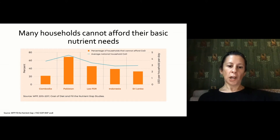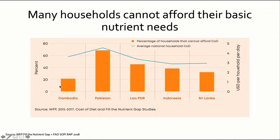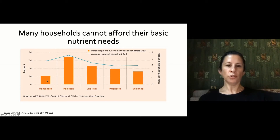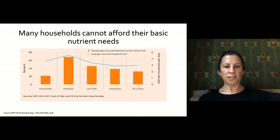This graph from the World Food Programme shows the cost of diets in Asian countries — Cambodia, Pakistan, Laos, Indonesia, and Sri Lanka — showing the percentage of households that cannot afford their basic cost of diet. In Cambodia, only 20% of households can meet their basic cost of diet, which is quite incredible. You see this in many places around the world where people simply cannot afford their basic nutritional needs.